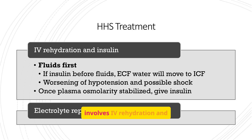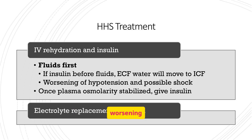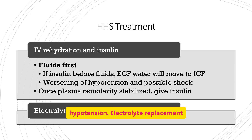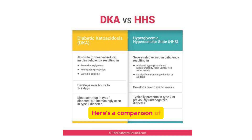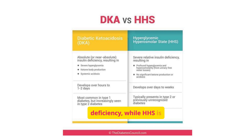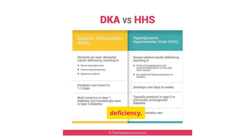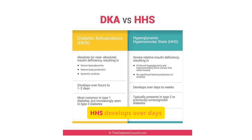HHS treatment involves IV rehydration and insulin. Fluids should be given first to prevent worsening hypotension. Electrolyte replacement may also be needed. DKA is caused by absolute insulin deficiency, while HHS is caused by relative insulin deficiency. DKA develops over hours to days, while HHS develops over days to weeks. HHS has a higher mortality rate than DKA.